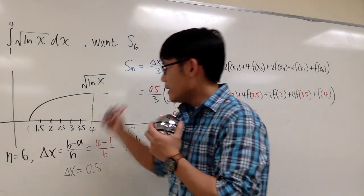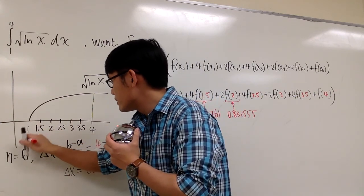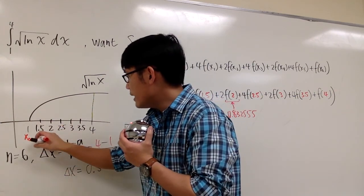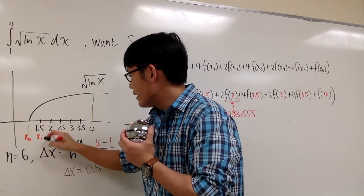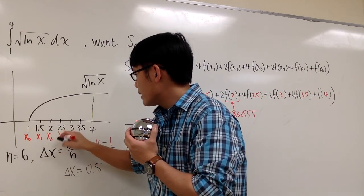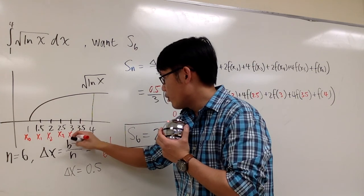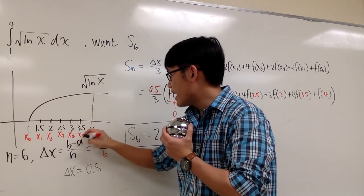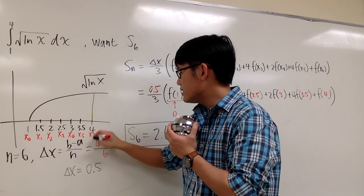So x1, I mean x naught is the 1, which is the first number that we have. And then x1 is 1.5, x2 is 2, x3 is 2.5, x4 is 3, x5 is 3.5, and x6 is 4.